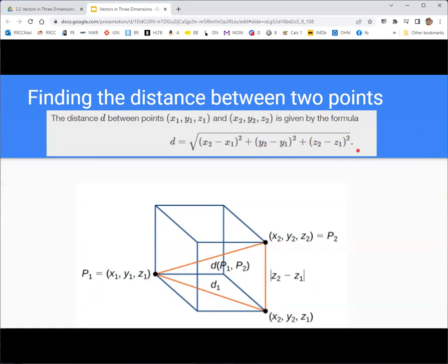And you can derive this from the distance formula in two dimensions by drawing this rectangular solid. And then going from point one to point two, you can look at going in the two-dimensional distance here, where z does not change. And of course, you can use the two-dimensional distance formula for that. And then the one-dimensional distance formula is just the absolute value of the difference. And then you can use the right triangle and the Pythagorean theorem to combine those and get this distance formula.